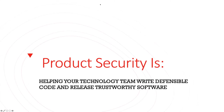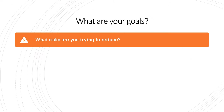We've defined app security broadly as helping your technology team write defensible code and release trustworthy software. The reason we've defined it intentionally vaguely is because code and app security is now everywhere — it's not just on our engineering teams. It's in our infrastructure teams; people may be writing different internal microservices to solve little problems. We've seen a code explosion, so we need to have app security in the places where it matters.